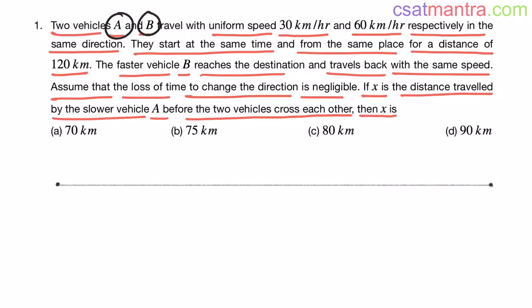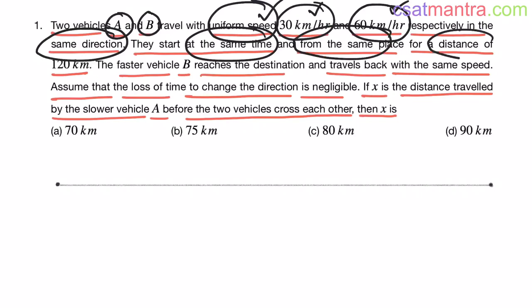Two vehicles A and B travel with uniform speed. That means constant speed. Their speeds are constant throughout the journey. 30 kilometers per hour, 60 kilometers per hour. But these values are not changing throughout their journey. That is what is meant by uniform speed, constant speed. And they are traveling in the same direction. They start at the same time from the same place for a distance of 120 kilometers.